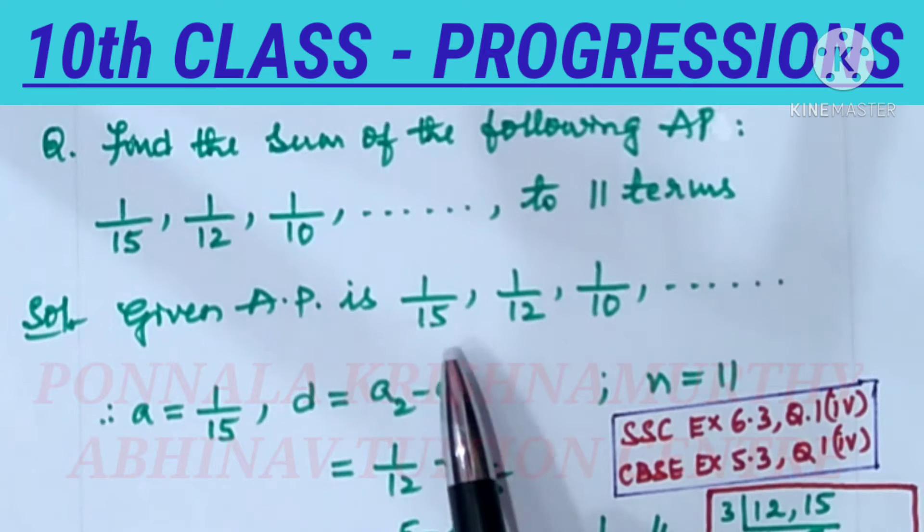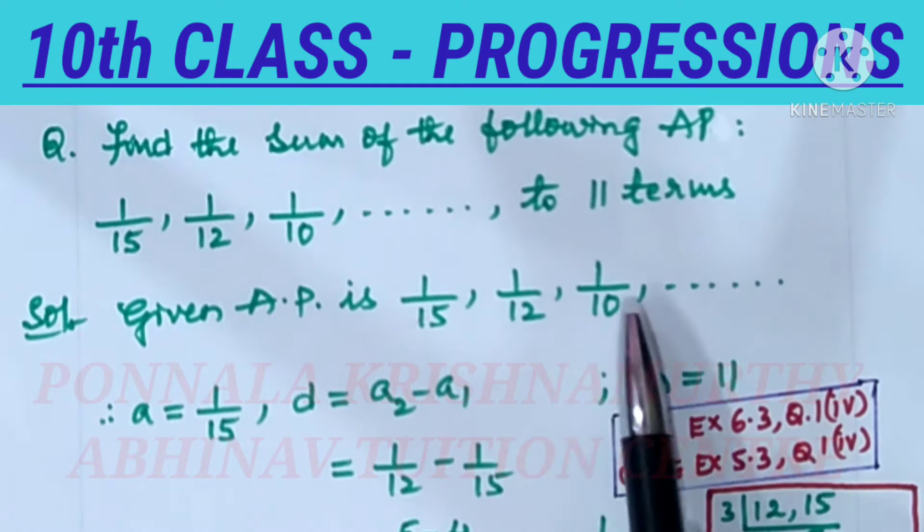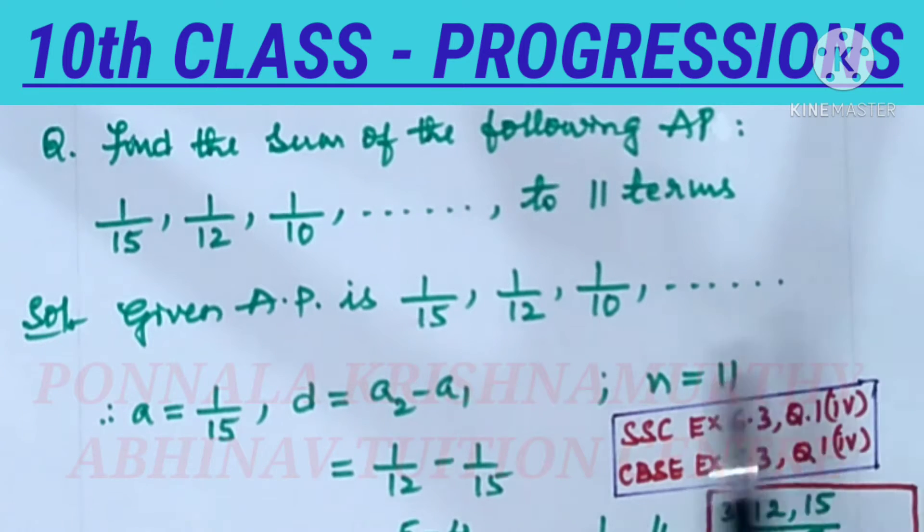Given AP is 1/15, 1/12, 1/10 and so on. Here the first term A equals 1/15. Common difference D equals A2 minus A1, that is 1/12 minus 1/15.